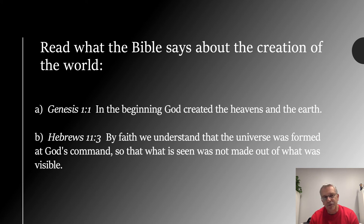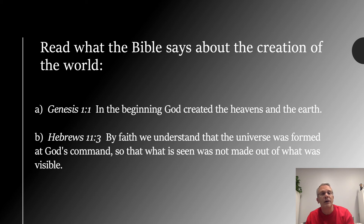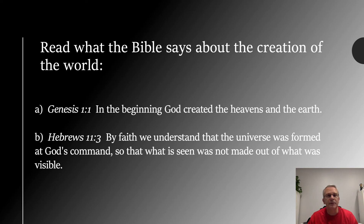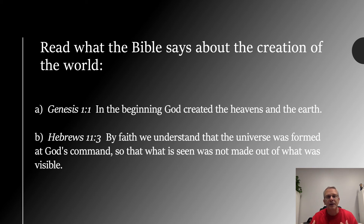The second part of that Bible passage describes how God really began creation. It says what is seen — our material world — was not made out of what was visible. In other words, God didn't start creation by looking around and pulling existing stuff together to make the world. He didn't use stuff already in existence. The Bible tells us there wasn't anything else in existence except God. God did not use stuff already around to begin creating.